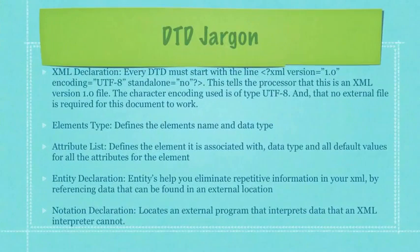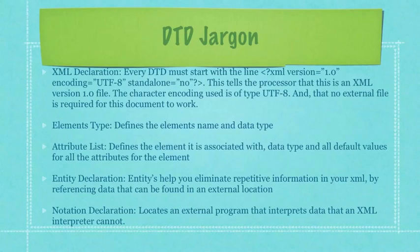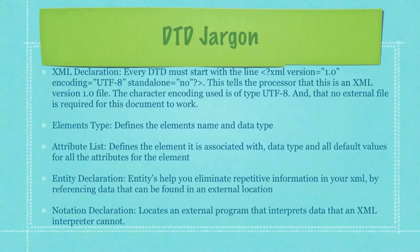Now I'll go through some DTD jargon. First, you have XML declarations — every DTD must start with this line right here, which tells the processor that this is an XML version 1.0 file, that the character encoding used is UTF-8, and that no external file is required for this document to work, as defined in the standalone attribute. Element types define the element's name and the data type of that element. Then you have attribute lists, which define the element it is associated with, the data type, and the default values for all the attributes for the element.